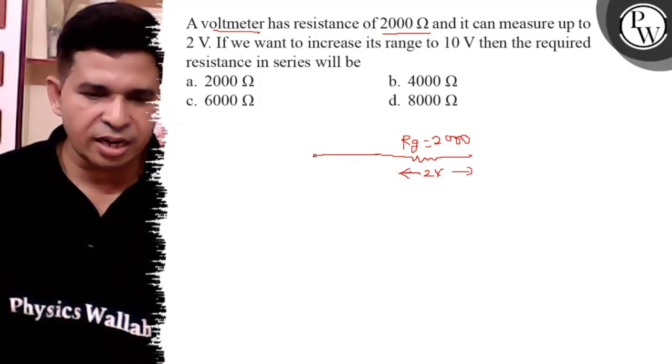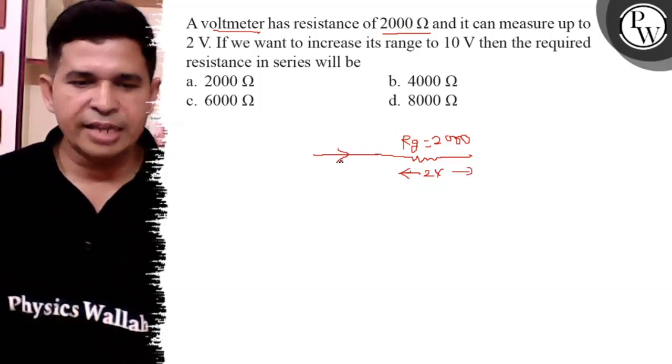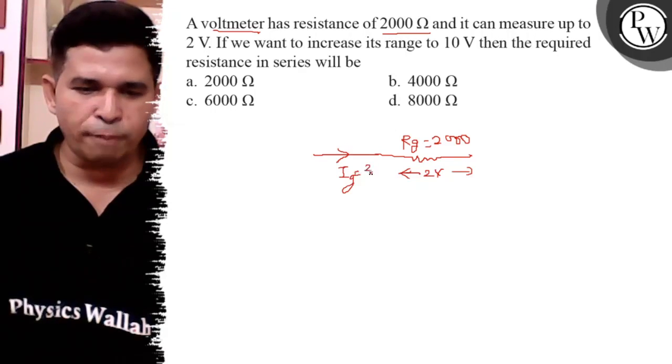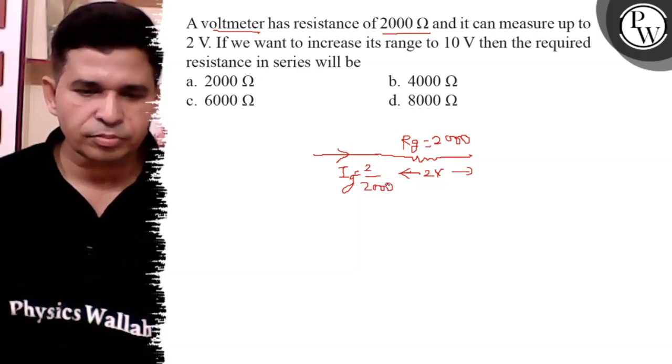So you can determine the current which is flowing ig. ig is nothing but 2 upon 2000, so it is 1 milliampere.